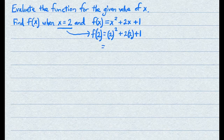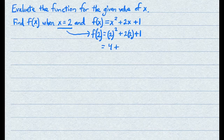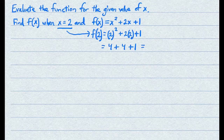Now all you have to do is simplify. 2 squared is 4, plus 2 times 2 is 4, plus 1. So here you have 9, and that's your answer.